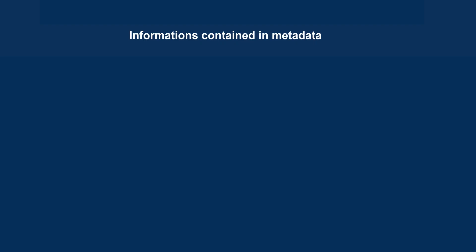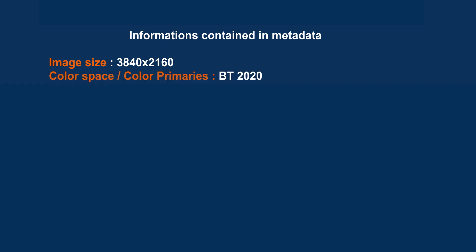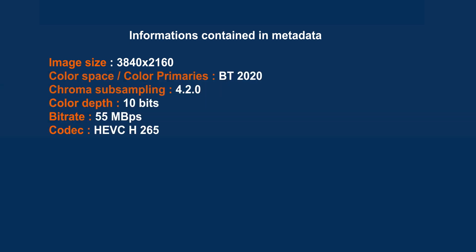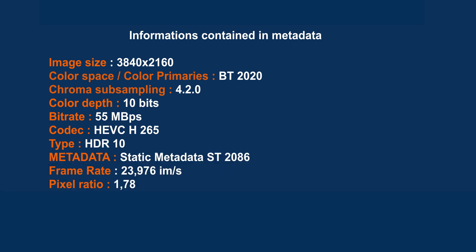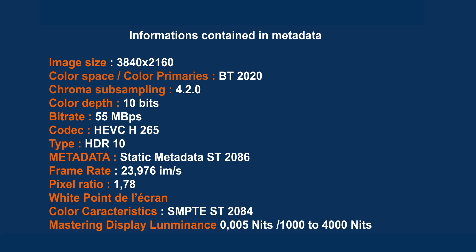What is inside the metadata? There are a lot of things: the size of the image, the color space, the sampling, the color depth, the bitrate, the used codec, the HDR characterization, the type of metadata used, the frame rate, the pixel ratio, the used EOTF curve, the color primaries, the color range, and the mastering display luminance.